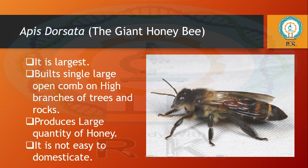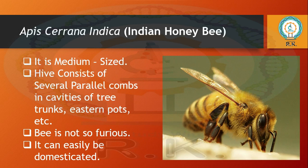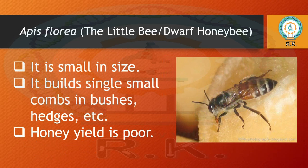Apis dorsata is not used for apiculture purposes. Next is Apis serrana indica, the Indian or Asian honey bee. It is medium-sized. Its hive consists of several parallel combs in cavities of tree trunks and eastern ports. This bee is not so furious or dangerous like Apis dorsata, so it is easy to domesticate and is used for apiculture.